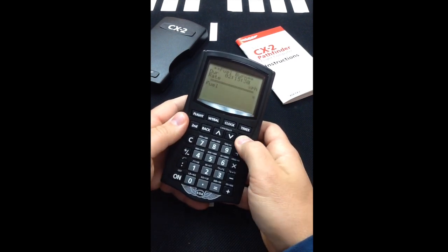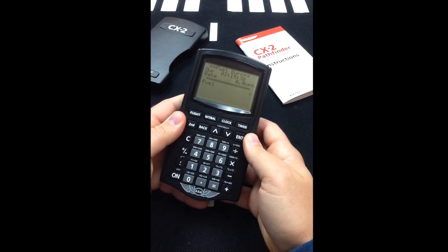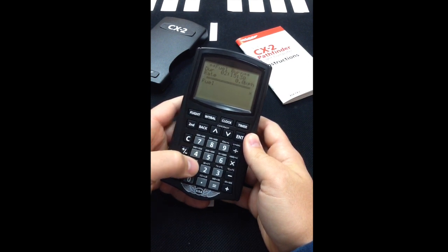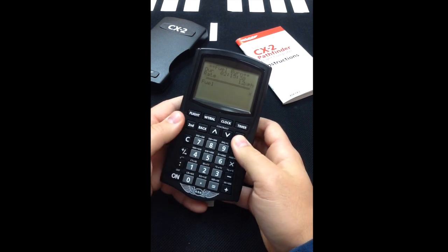and select Enter. The next field is our Rate, which can be found in the Pilot's Operating Handbook or will be included in the test question itself. For example, we will use 12 gallons per hour. Enter 1, 2, and select Enter.